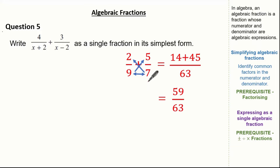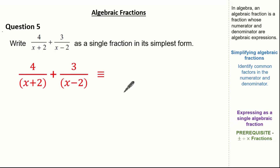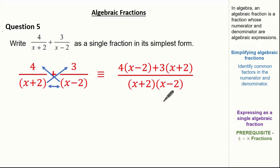This cross-multiply method is going to be applied to algebraic fractions too. Using the cross-multiply method, we multiply: (x minus 2) multiplied by 4 is here, and (x plus 2) multiplied by 3 is here. The question says add, so I've put my addition sign here. Just like before, (x plus 2) and (x minus 2) are multiplied and I've left them in factorized form, because we might need to cancel down later on.